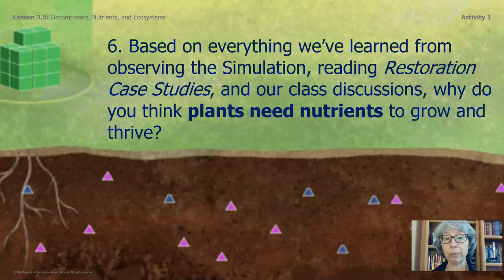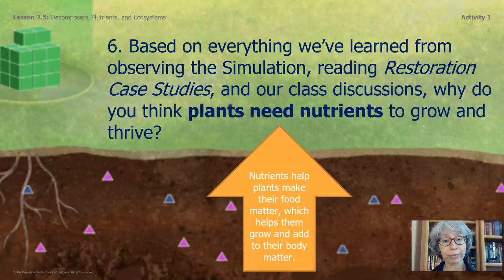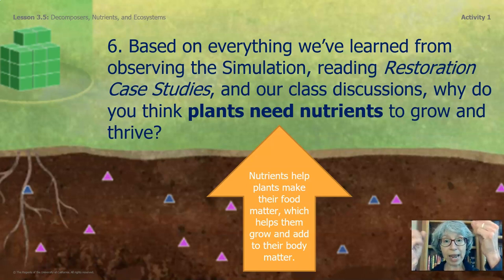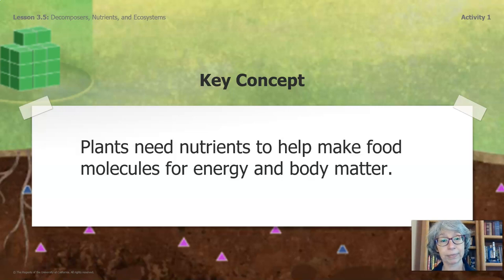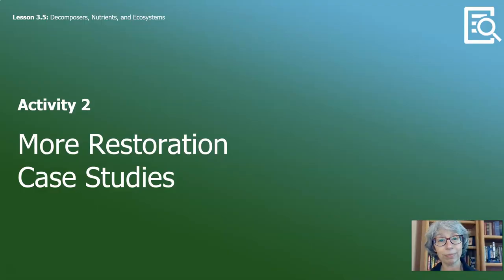Based on everything we've learned from observing the simulation, reading restoration case studies, and our class discussions, why do you think plants need nutrients to grow and thrive? Nutrients help plants make their food matter, which helps them grow and add to their body matter — the food matter, body matter connection. This consolidation leads us to the key concept: plants need nutrients to help make food molecules for energy and body matter.